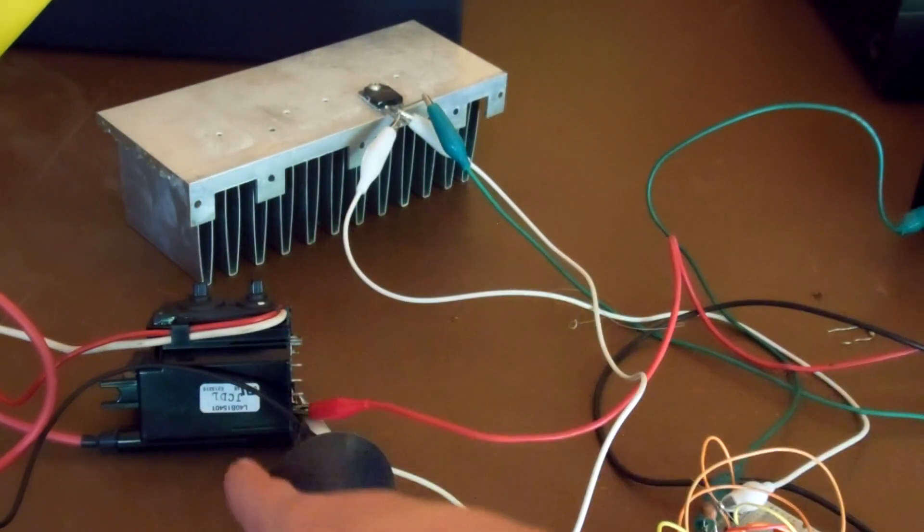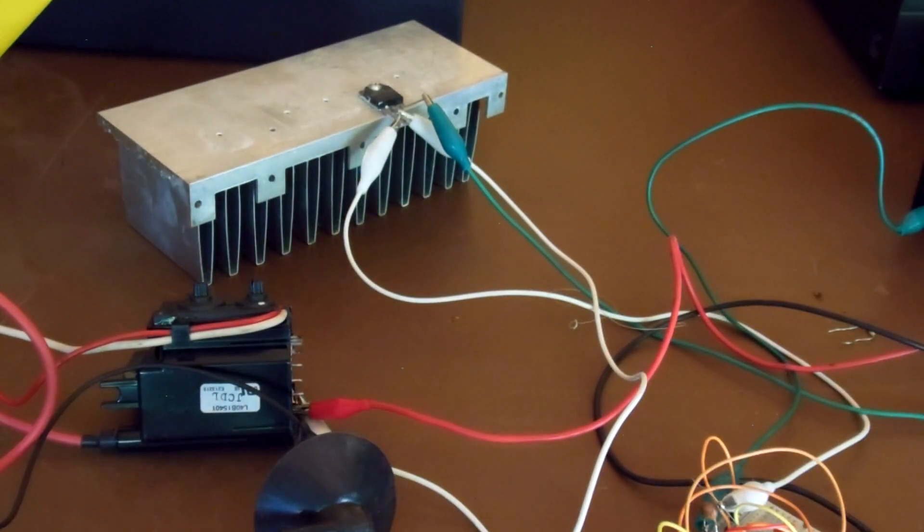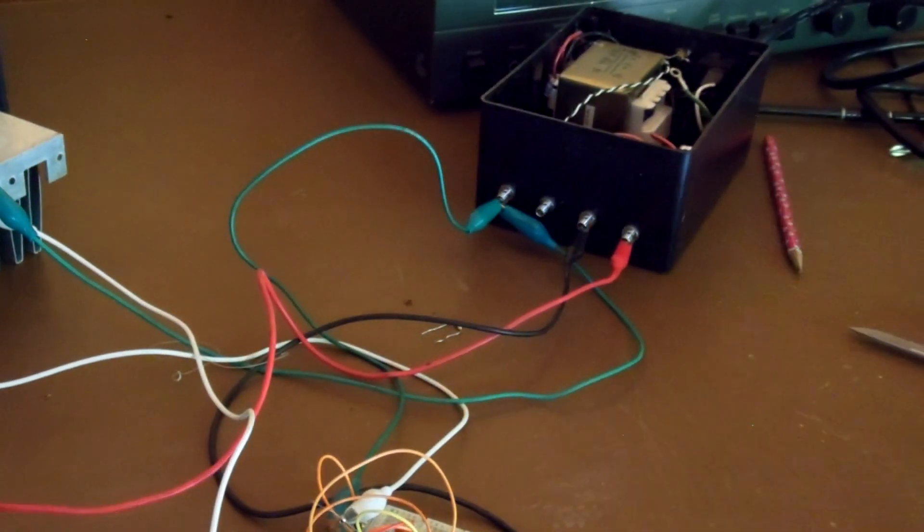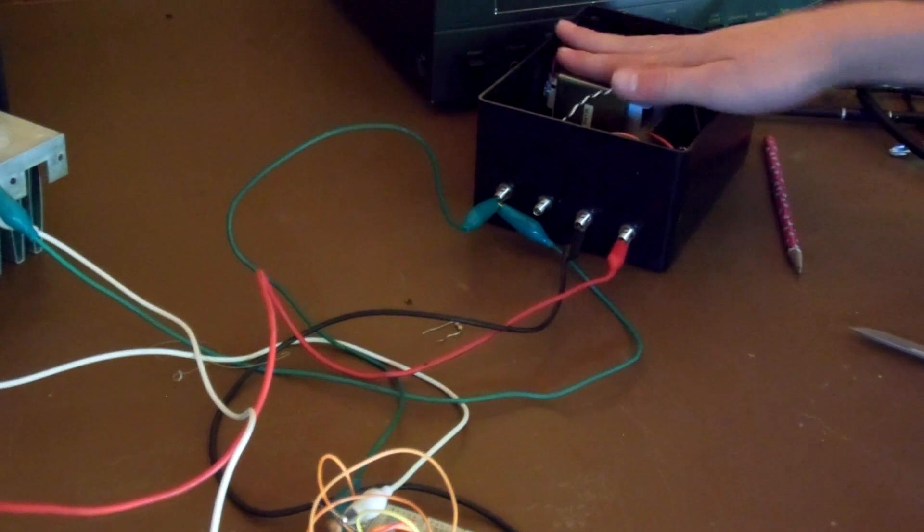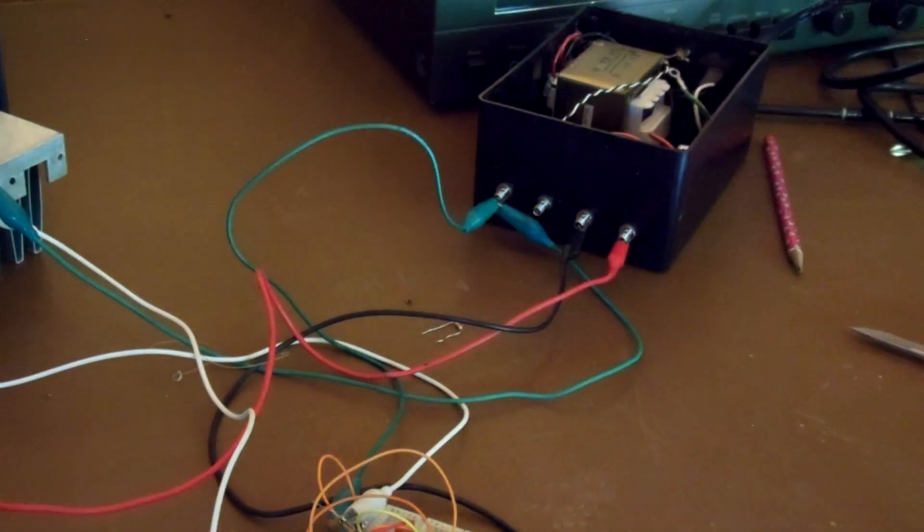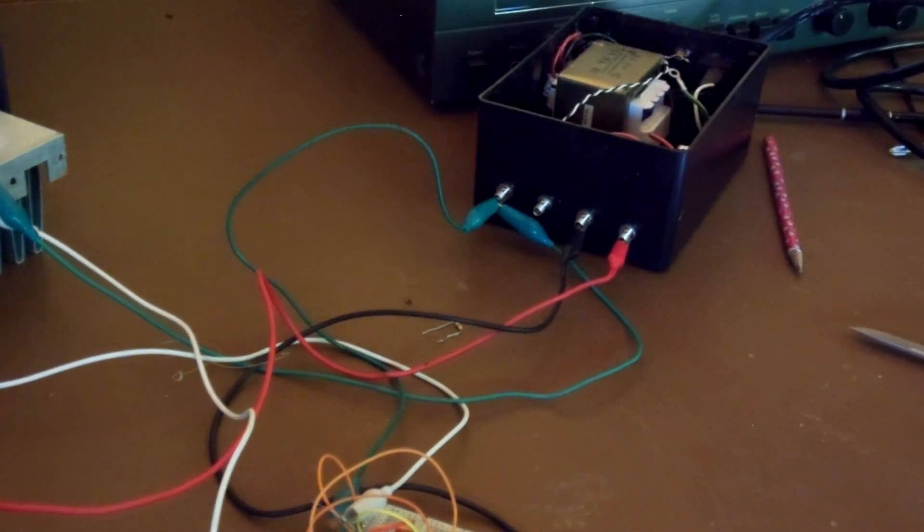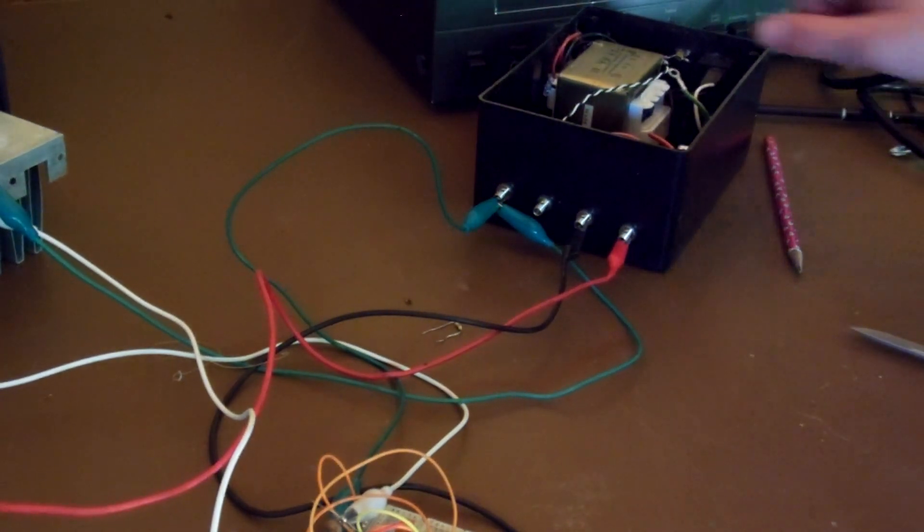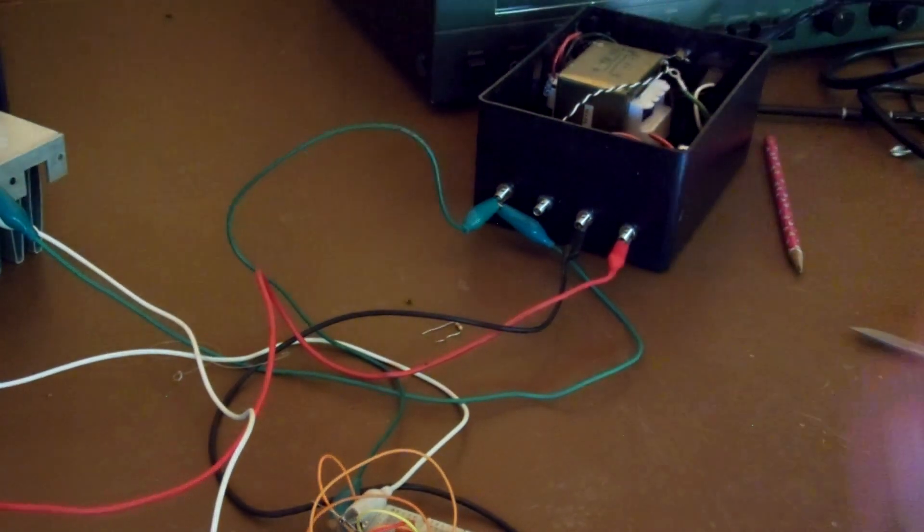And powering everything is this linear power supply that I built. If you check out Basic Electronics Episode 13, it will show you how to make a linear power supply. Now this is using the same design, only much larger. This is a 4 amp 30 volt center tap transformer.